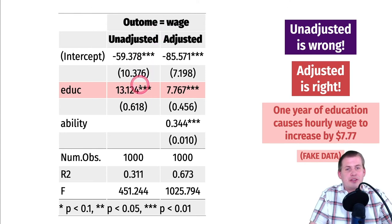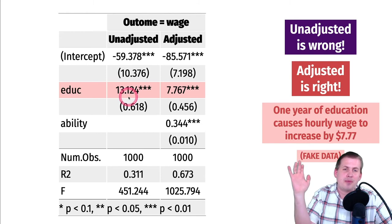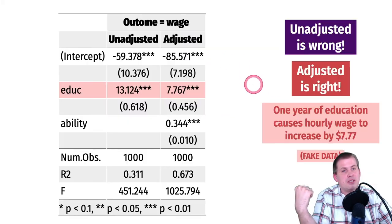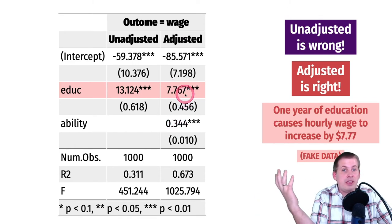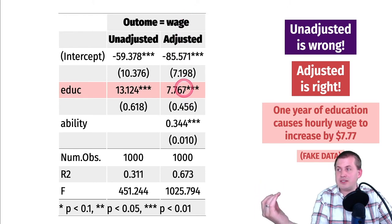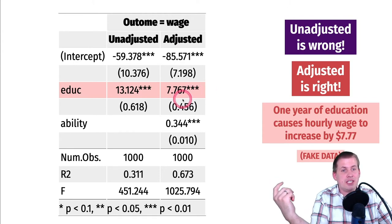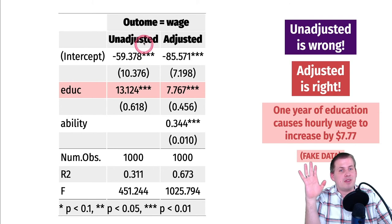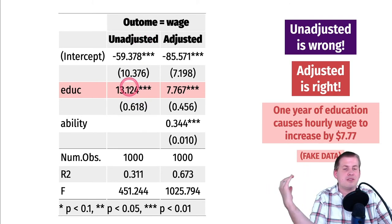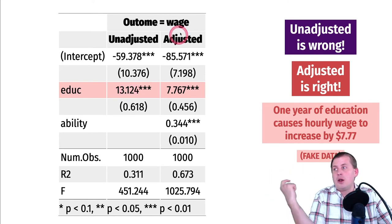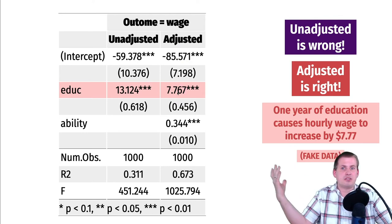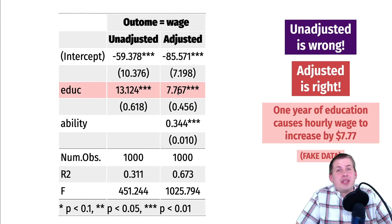Let's assume we have a dataset with years of education, wage, and a magical ability column. If we run the simple model — wages explained by education alone — it says an additional year of education causes your wage to go up by thirteen dollars an hour. But that is wrong because it's not adjusting for ability; there's backdoor confounding. If we instead control for ability, the official causal effect is $7.76 per hour — an additional year of education causes wages to increase by about $7.77 an hour. This shows the naive model is wrong due to endogeneity; once we adjust for confounders we find the true causal effect.